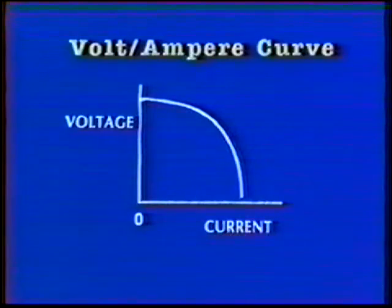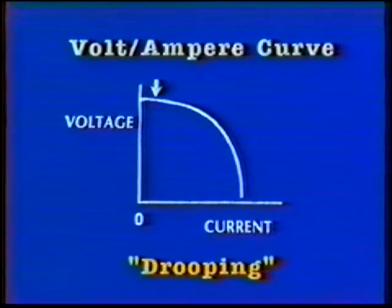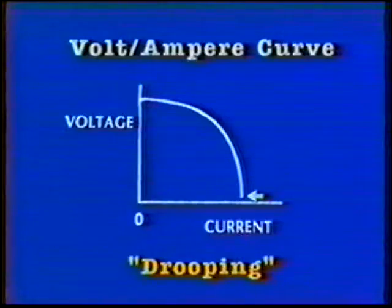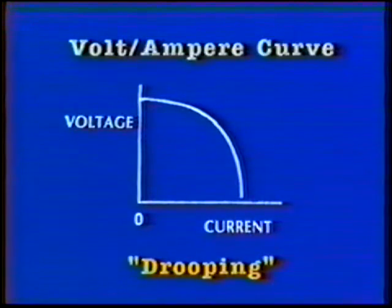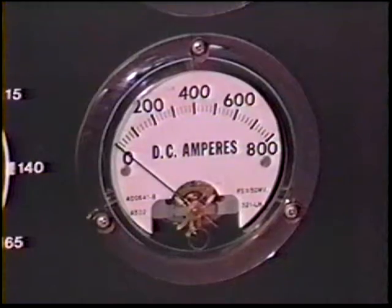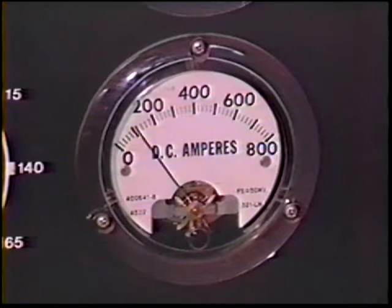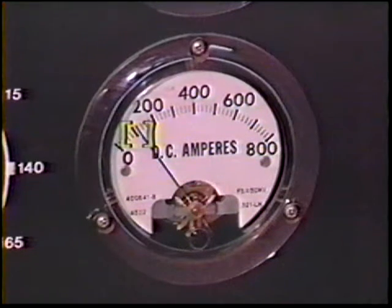The constant current power source produces a drooping volt-ampere curve. In reality, the current is not exactly constant, but it remains about the same for the varying arc lengths encountered in manual welding.